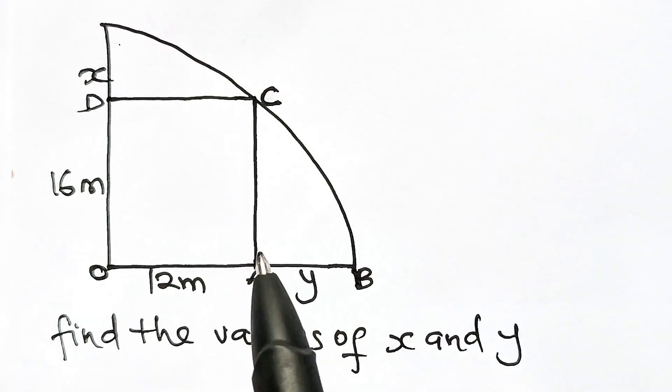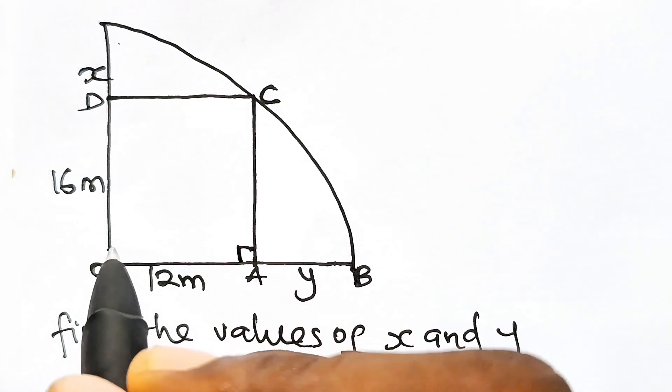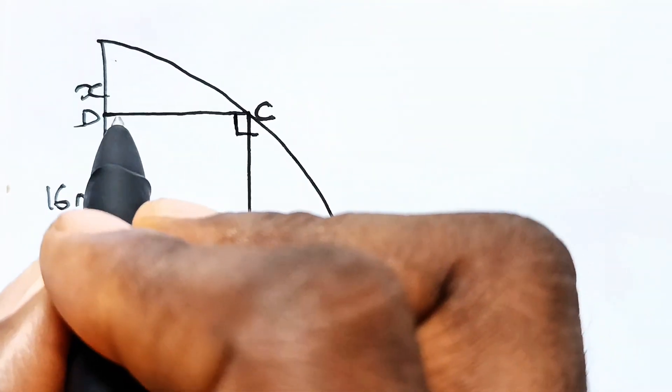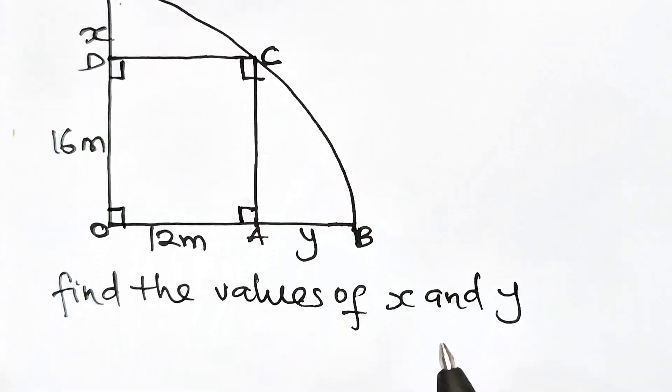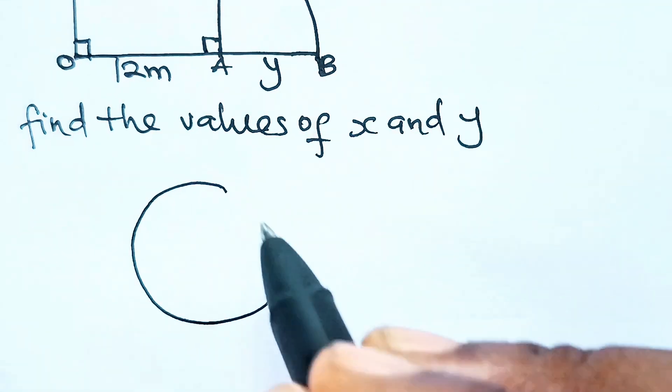If OADC is a rectangle, then this is a right angle, this is a right angle, this is also a right angle, and this is a right angle as well.